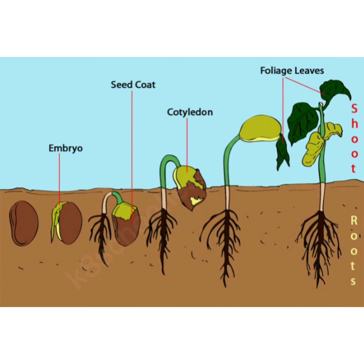The seed takes up water, activating enzymes that begin the growth process. Water enters the seed through the hole present in the seed coat. The seed coat is the outer covering of the seed.